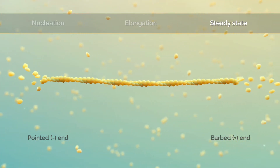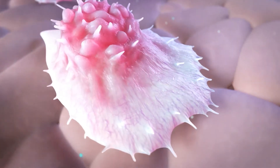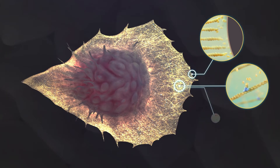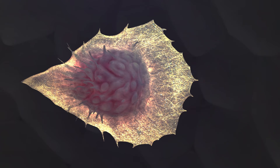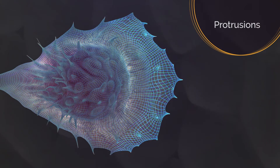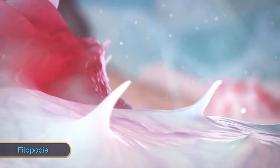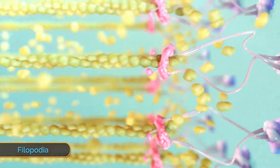At the leading edge of a moving cell, actin filaments are continuously treadmilling, branching off, and cross-linking. These activities push the plasma membrane, forming cell protrusions such as wide blunt projections called lamellipodia and narrow pointed projections called filopodia.